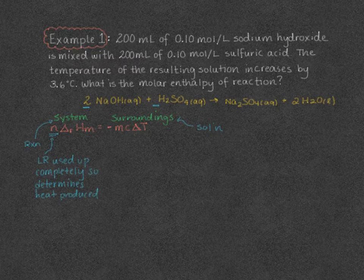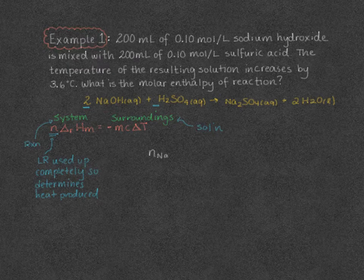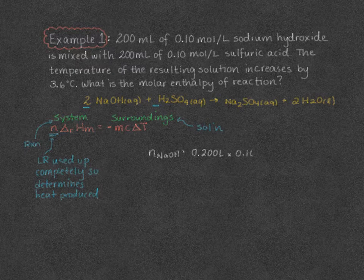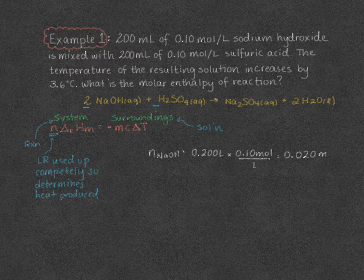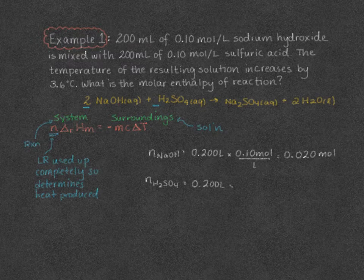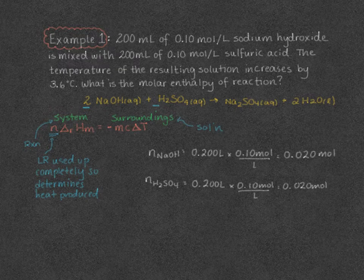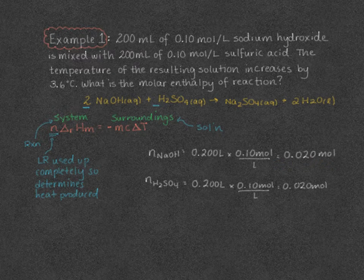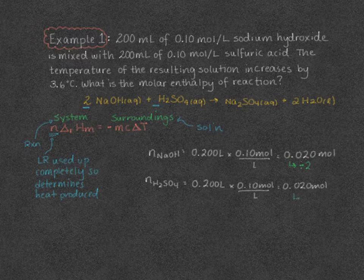We'll start by figuring out which is our limiting reagent by finding how many moles of each we have. Moles of sodium hydroxide: 0.200 liters times 0.10 moles per liter gives 0.020 moles. We do the same for sulfuric acid, also getting 0.020 moles. However, these have different coefficients, so we divide by their coefficients — sodium hydroxide by two and sulfuric acid by one.